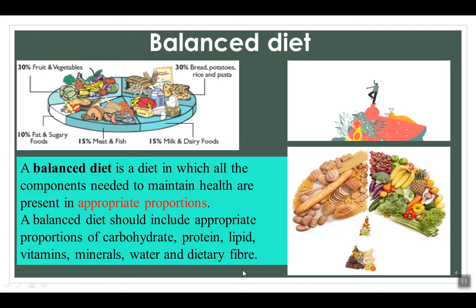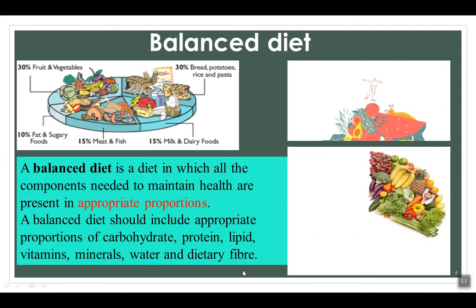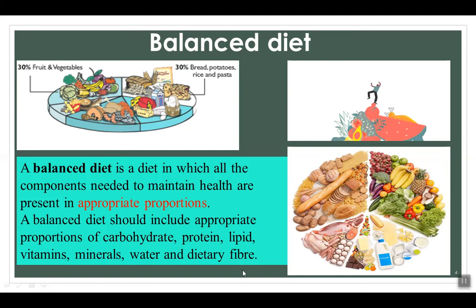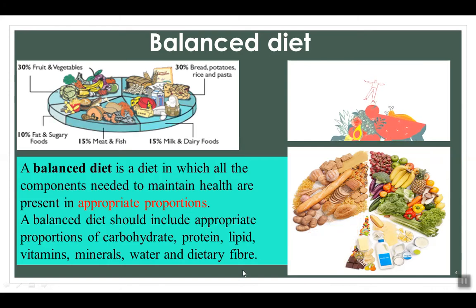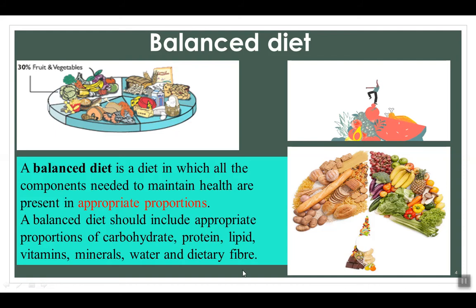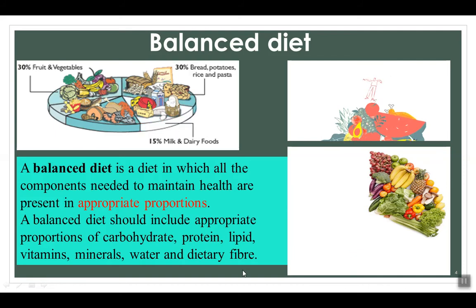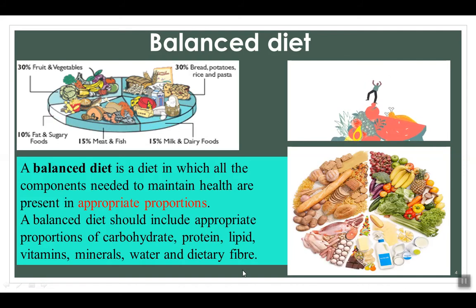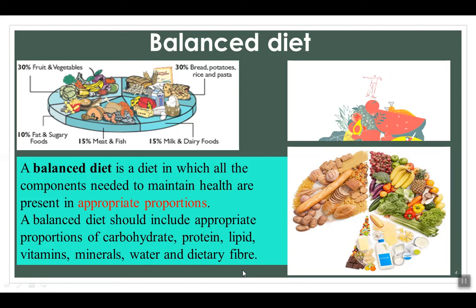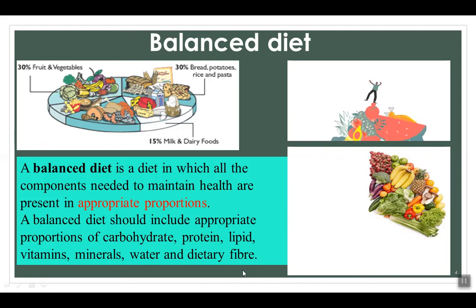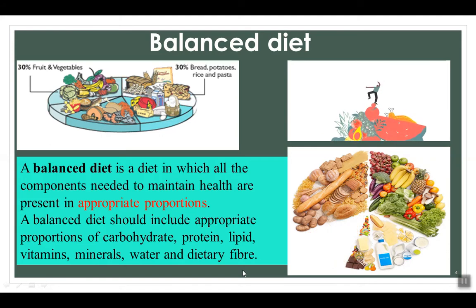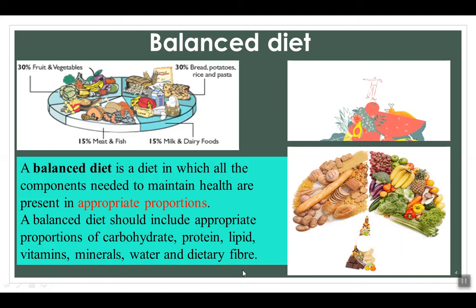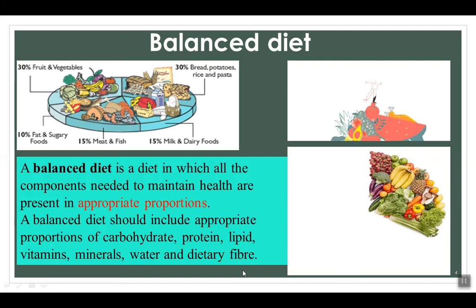Why do we actually need food? It's to supply us with fuel for energy, to provide materials for growth and repair of tissues, and also to help fight diseases and keep our body healthy. The food that we take in can be divided into two different nutrients: carbohydrates, lipids, proteins, vitamins, minerals, fiber and water.